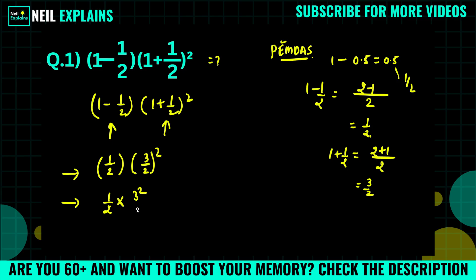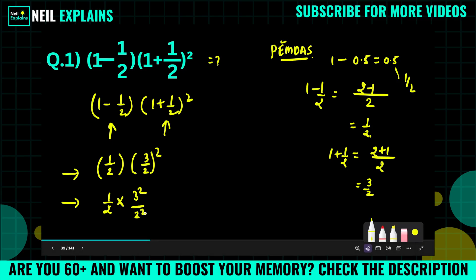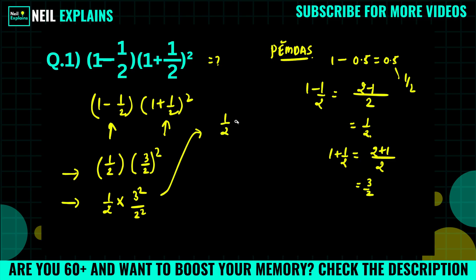Into 3² divided by 2². Now 1/2, and we will write like 3 times 3 divided by 2 into 2. So what we have: 3 times 3, that is equal to 9, and 2 into 2, that is 4, and 4 into 2, that is 8. So here 9/8 will be the right answer.